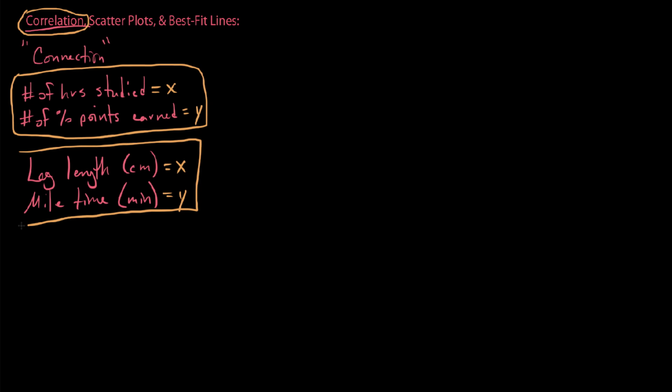So this would be another example of somebody's leg length and their mile time. Now, again, I really want to stress the fact that just because my leg length, maybe it goes up by a centimeter every time, maybe one person has their leg length is 38 centimeters, and then you go to the next person is 39, and the next person is 40, maybe. That doesn't mean that every time the leg length goes up that the mile time changes by the same amount. However, we can definitely see that there's a connection between these two quantities, these two values that are being related to one another.